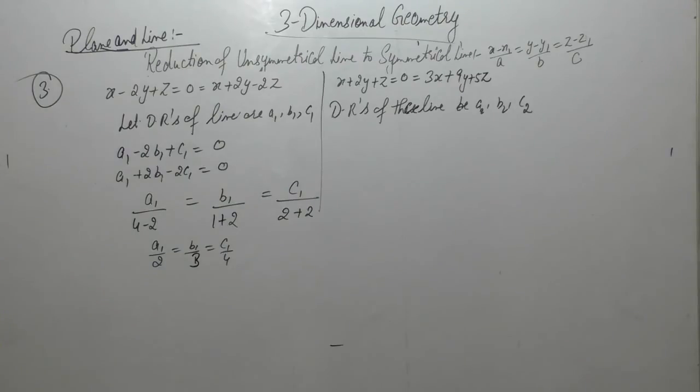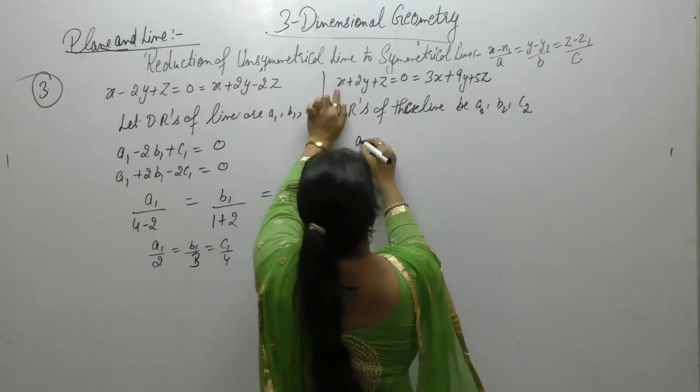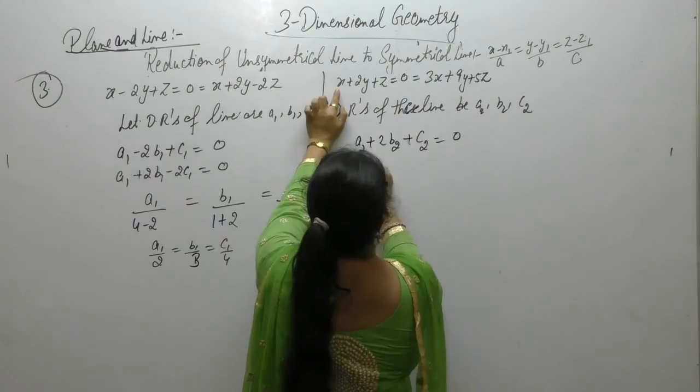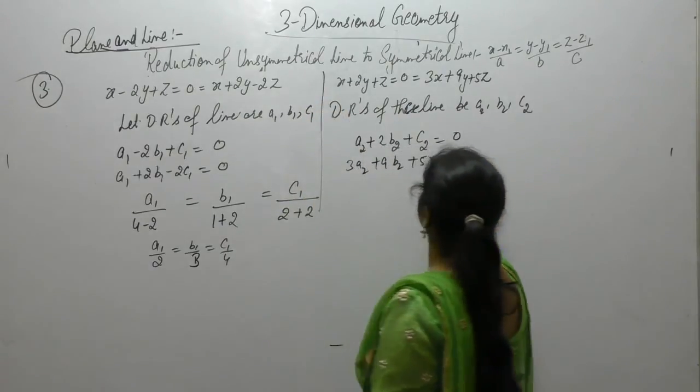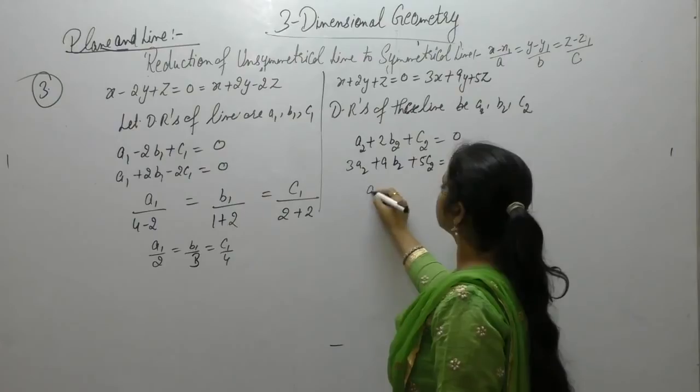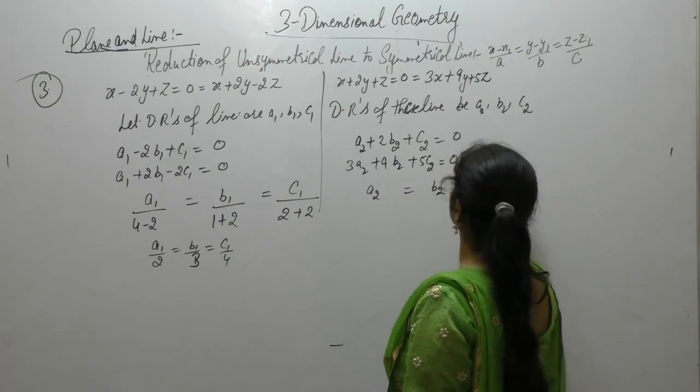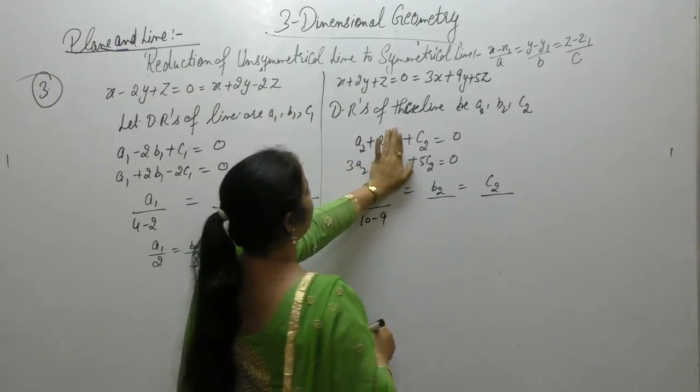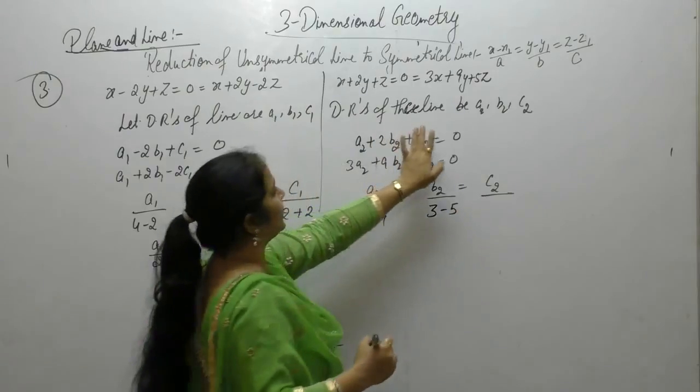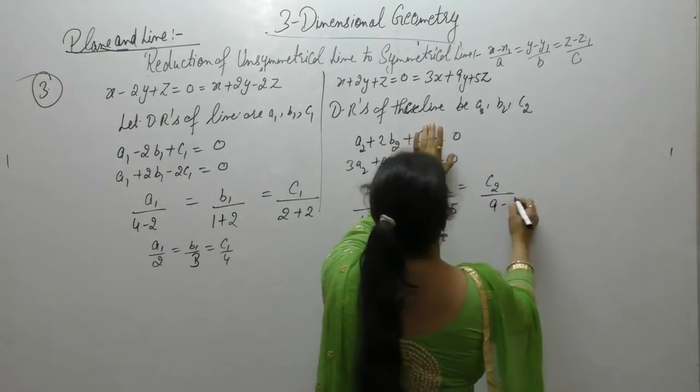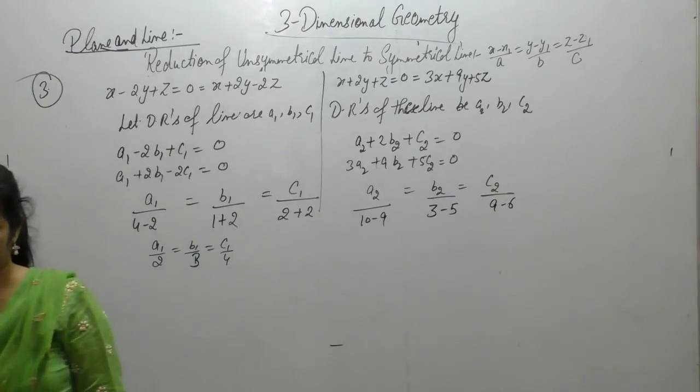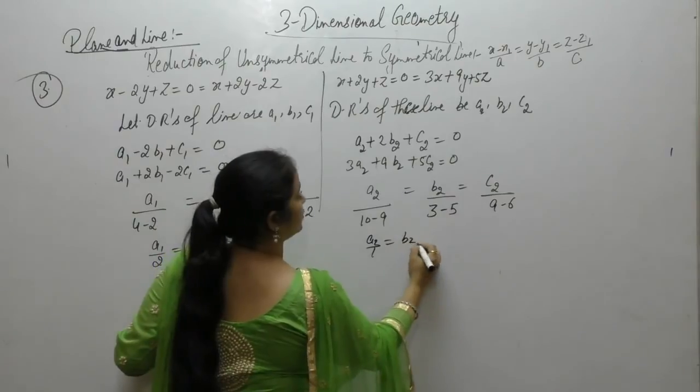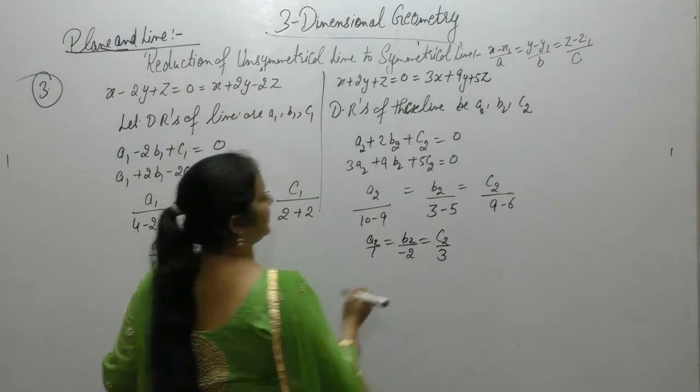Similarly for here A2 plus 2 B2 plus C2 3A2 plus 9 B2 plus 5 C2. Solve for A2 B2 and C2. A2 is 5 into 2 10 minus 9 into 1 1 into 3 minus 5 into 1 9 into 1 minus 3 into 2 6. So, we get A2 upon 1 B2 upon minus 2 and C2 upon 3.